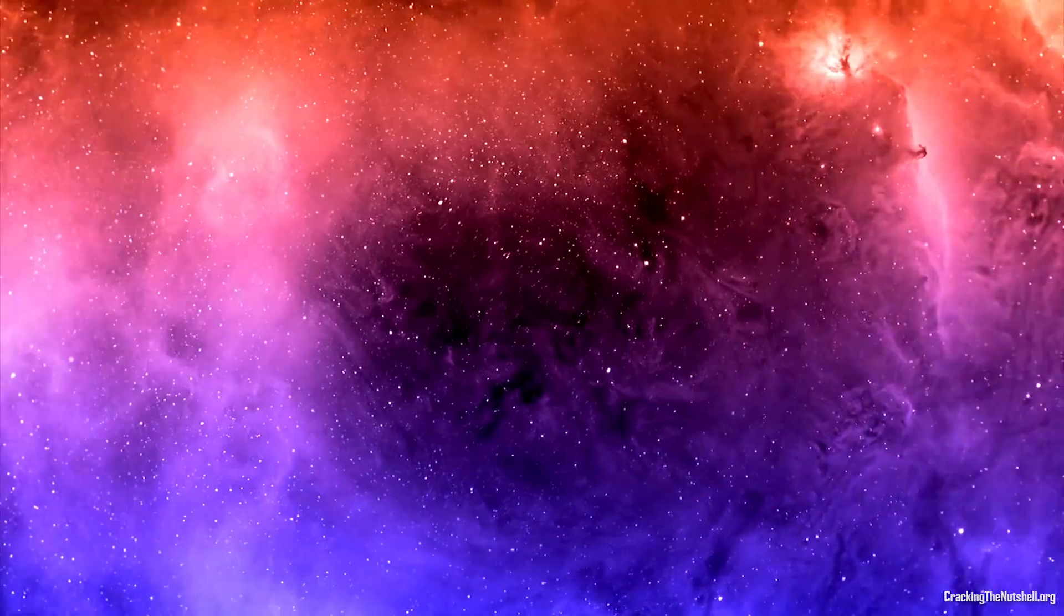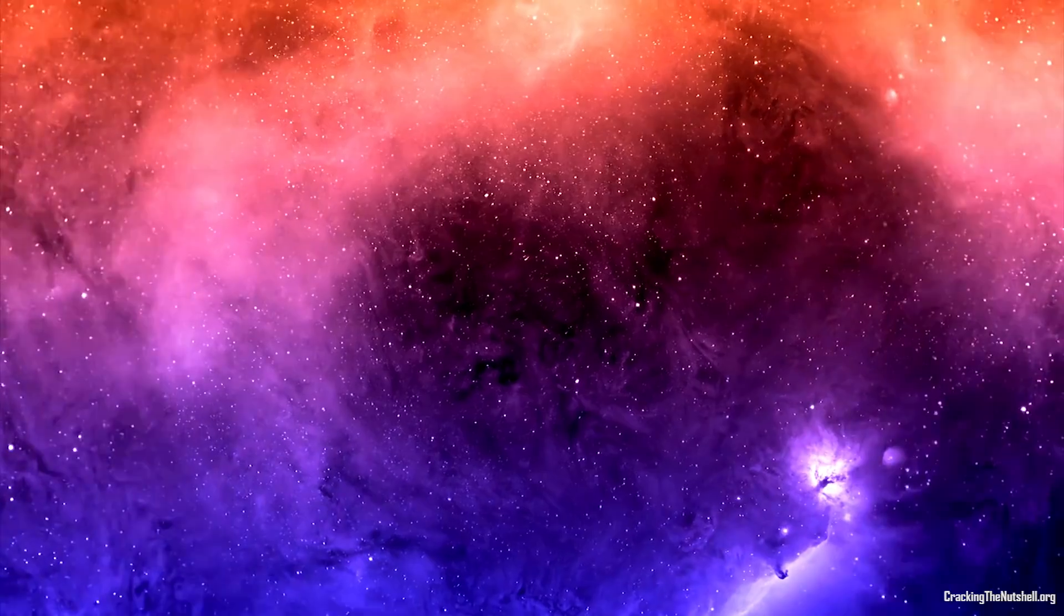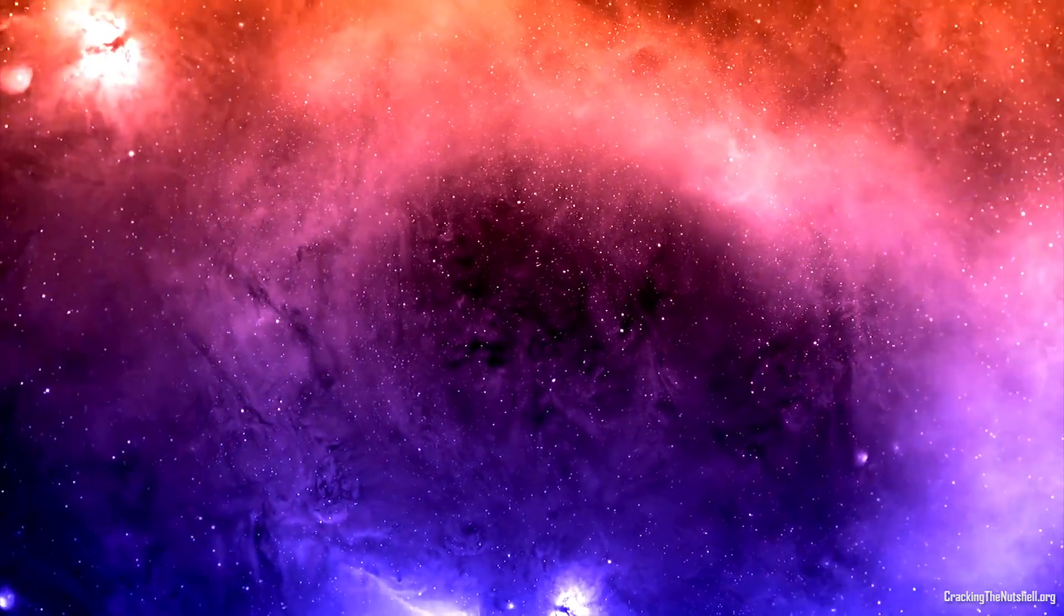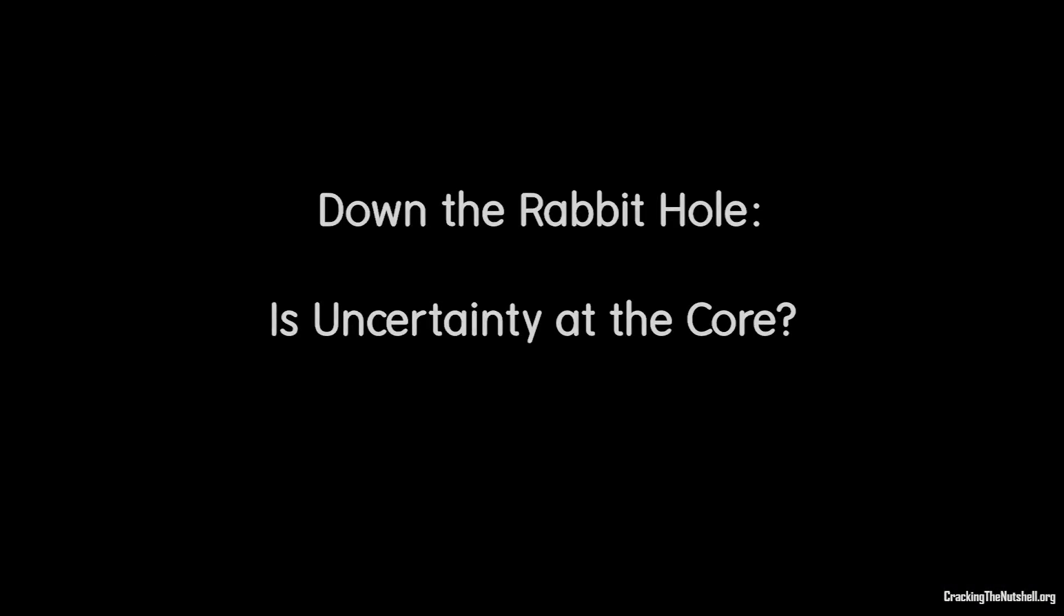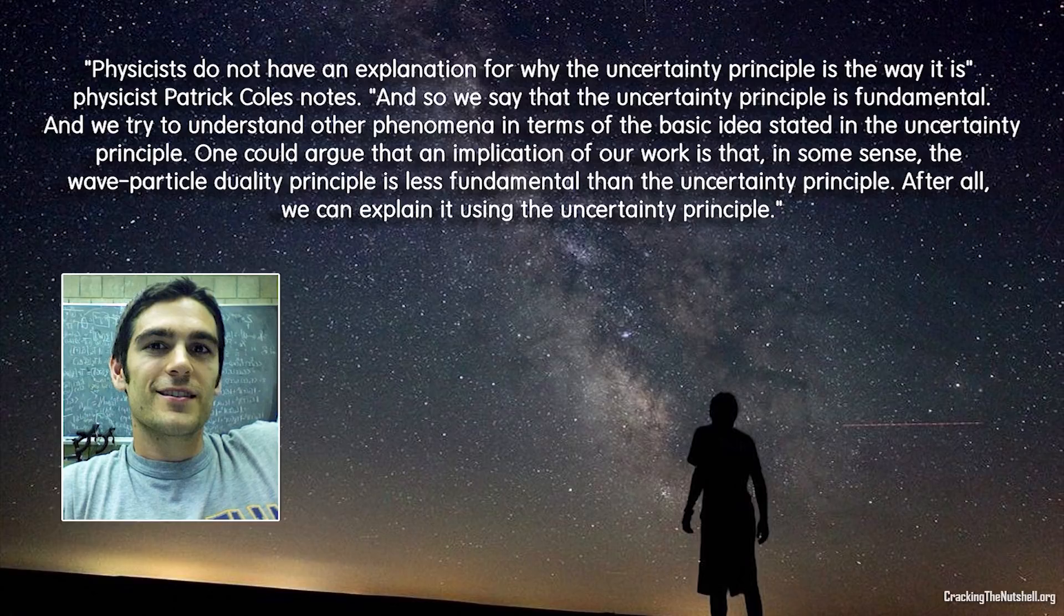If we go further down the rabbit hole, what other ways can we use to attempt to explain the why of uncertainty? What levels of reality could nature have evolved to be more efficient at, and how could this be so? Physicists do not have an explanation for why the uncertainty principle is the way it is, physicist Patrick Coles notes. And so we say that the uncertainty principle is fundamental, and we try to understand other phenomena in terms of the basic ideas stated in the uncertainty principle.